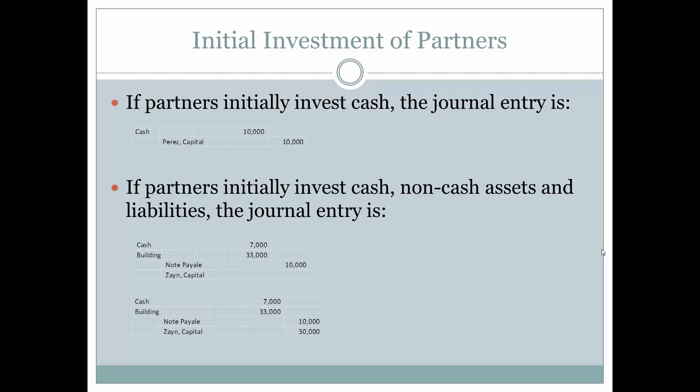If the partners initially invest cash, the journal entry is to debit cash and then credit the capital account for the value of the cash.